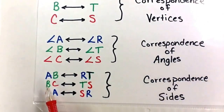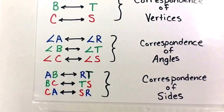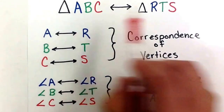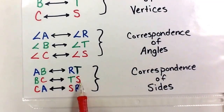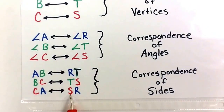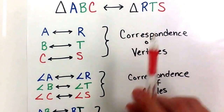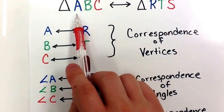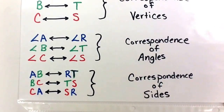For correspondence of sides, we don't put a symbol — we just put the two letters that the side connects. Side AB corresponds to the first and second letters of the other triangle: RT. BC corresponds to TS — second and third letters. CA corresponds to SR — third letter first, then first letter. You must keep the same order. This is called the correspondence of sides.